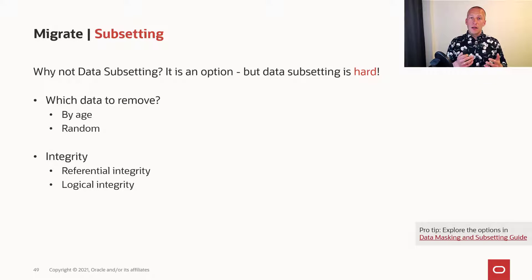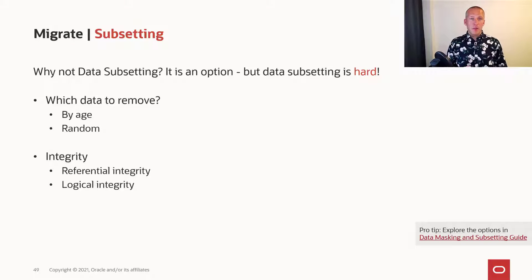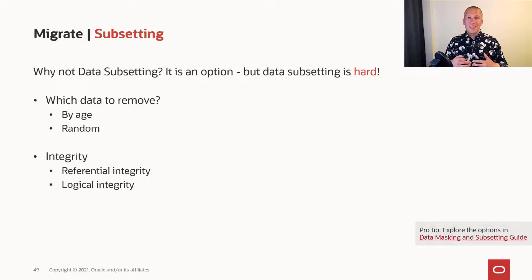You can use the Enterprise Manager's features in data masking and subsetting, but still, with those tools, it is really hard to get in place. Because which data should you remove? Should you just remove some of the oldest data, or should you do it random? What makes sense in terms of your testing?